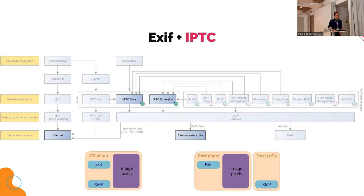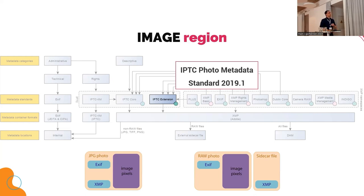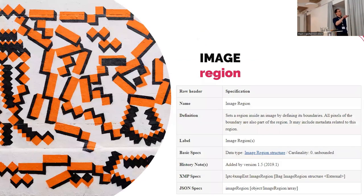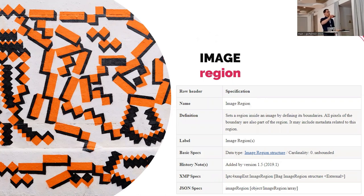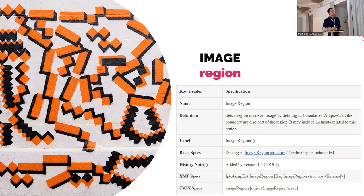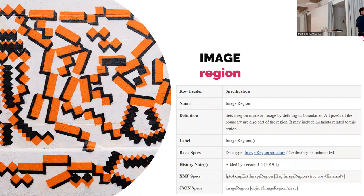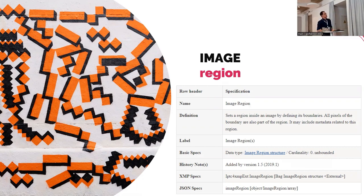The relevance to this talk is that the IPTC extension standard, which is updated every year, launched in 2019 a new photo metadata standard, and there they introduced what we call image regions. These image regions are defined as a region inside an image, delineated by some boundaries, where all the pixels inside this boundary are part of the image region. This means you could make an image region and attach metadata simply to that region.